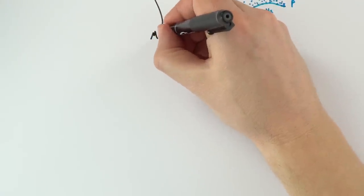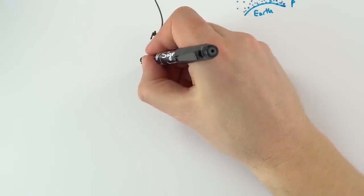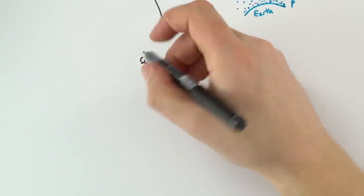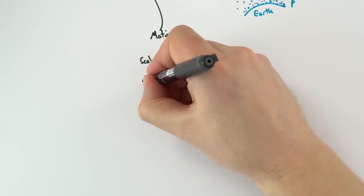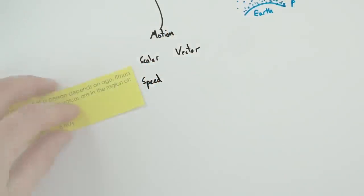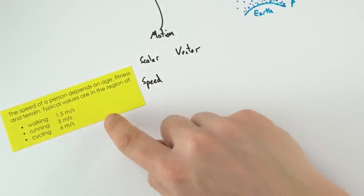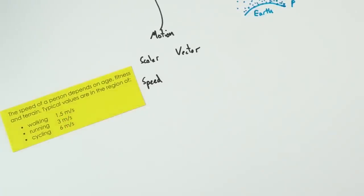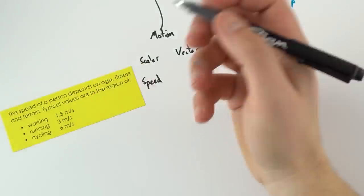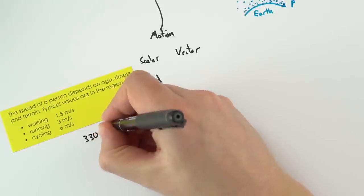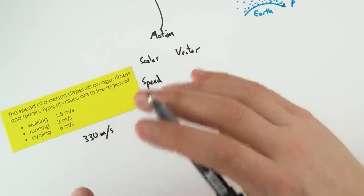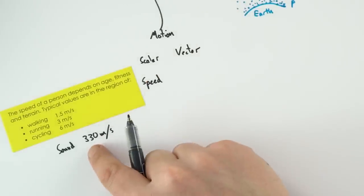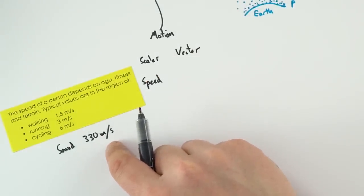Moving on to the motion of objects: scalar quantities just have size, while vector quantities have size and direction. Speed is a scalar — it's just how quickly something is travelling. Walking pace is about 1.5 metres per second, sound travels at 330 m/s, and light and other electromagnetic waves travel at 300,000 metres per second.